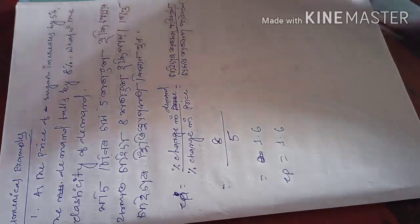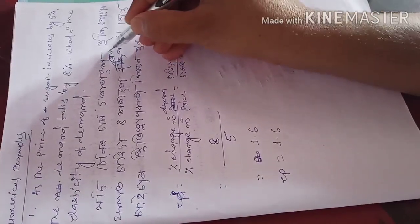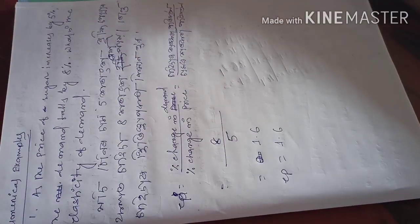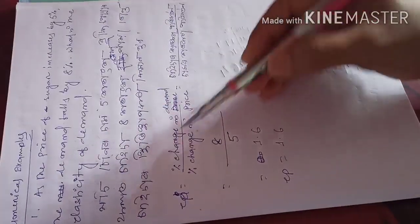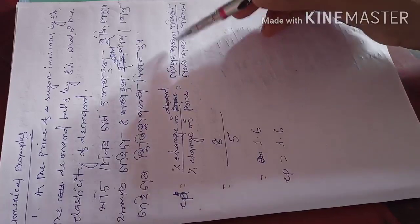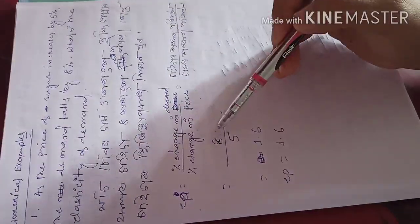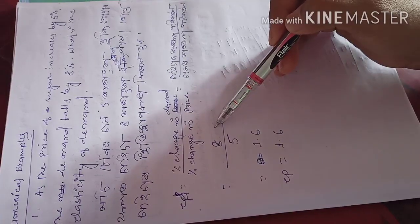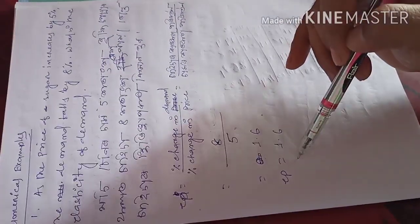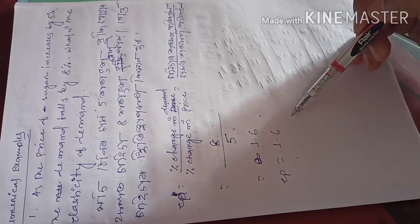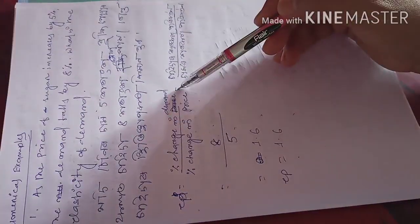The formula is: elasticity of demand equals percentage change in demand divided by percentage change in price. In our example, the percentage change in demand is 8 percent and the percentage change in price is 5 percent. So 8 divided by 5 equals 1.6. Therefore, the price elasticity of demand is 1.6. Since both values are given in percentage terms, we use the percentage method.